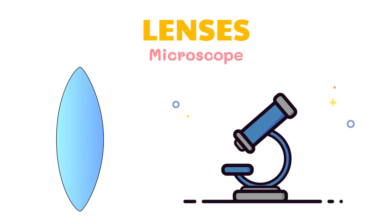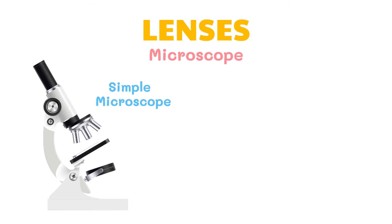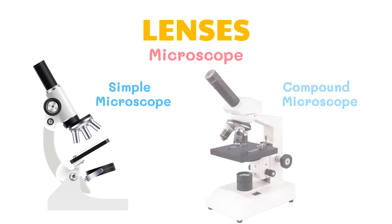Microscopes work by using biconvex lenses to produce a magnified version of the images. Microscopes are a little more complicated because they usually have multiple lenses. A simple microscope uses a single lens, so magnifying glasses are simple microscopes. Compound microscopes use two or more lenses in a row to magnify objects for viewing. In general, compound microscopes require the specimen for viewing to be thin or transparent enough so light can pass through. These microscopes provide high magnification, but the view is two-dimensional.